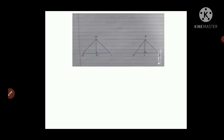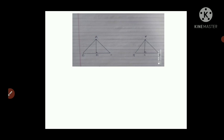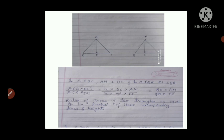First we'll go over some basics. You can see two triangles drawn here — triangle ABC and triangle PQR. In triangle ABC, AM is the height and BC is the base. In triangle PQR, PS is the height and QR is the base. It is given that AM is perpendicular to BC and PS is perpendicular to QR.